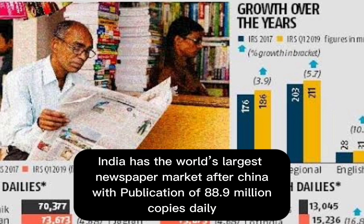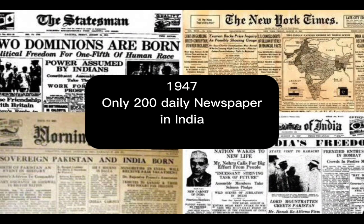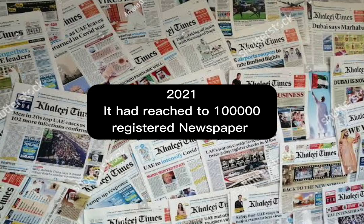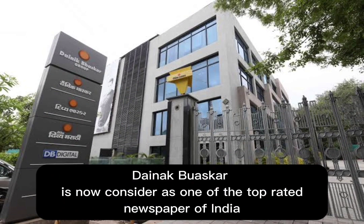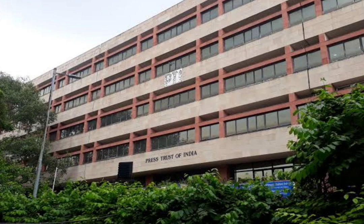India has the world's largest newspaper market after China, with publication of 88.9 million newspapers. From a little over 200 dailies published in post-independence India to over 100,000 registered newspapers and periodicals. As of 2021, Dainik Bhaskar is now considered as one of the top-rated newspapers of India. Press Trust of India is the largest news agency in India, headquartered in Delhi, among more than 450 Indian newspapers, and has a staff of about 2,000 writers spread across 150 offices nationwide.